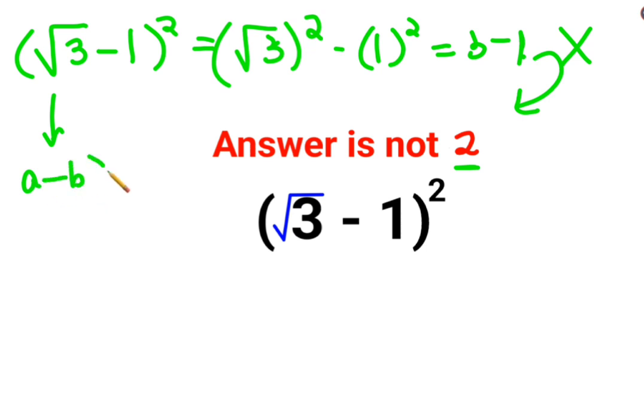The expansion comes out to be a square plus b square minus 2 times a into b.